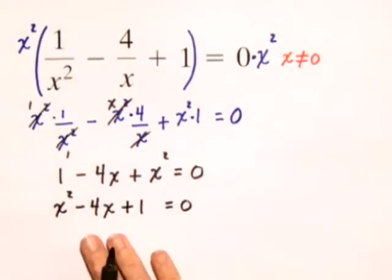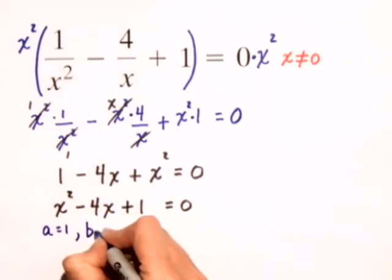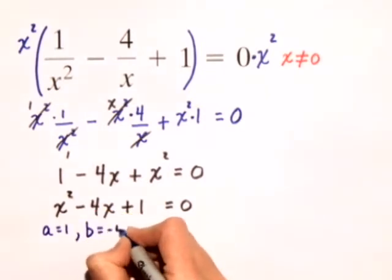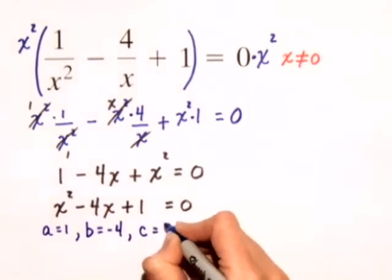Now, in this case, this quadratic equation will not factor on the left-hand side. So let's apply the quadratic formula to solve this equation. In this case, a is equal to 1, b is equal to negative 4, and c is equal to that last constant term, which is 1.